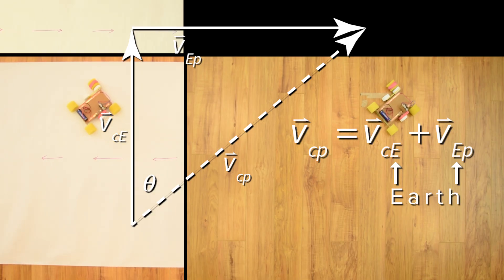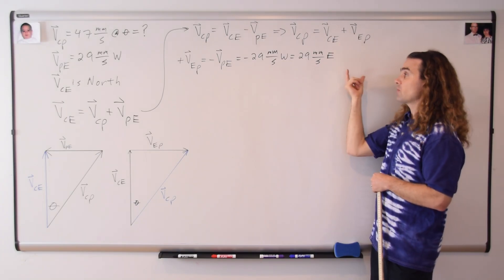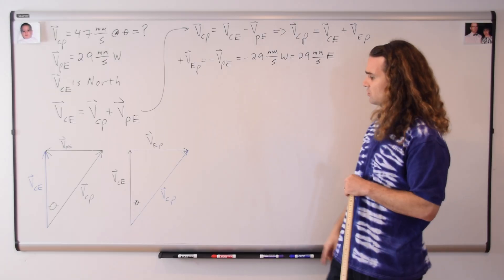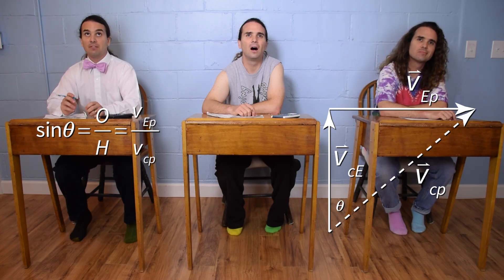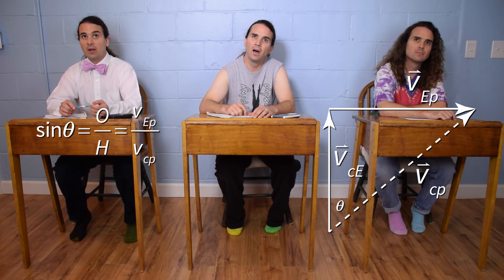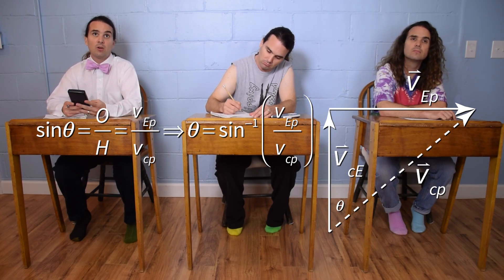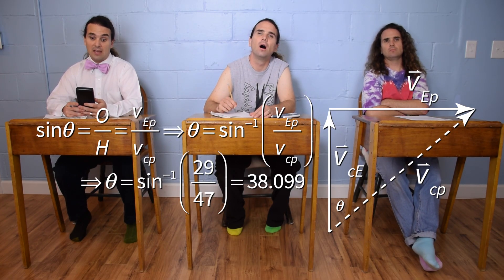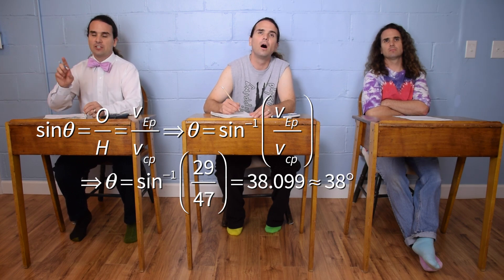Because the common subscript of Earth is on the inside of the subscripts on the right-hand side, it drops out and does not appear on the left-hand side. Now, Billy, could you please solve Part A — solve for theta in our vector diagram? Sine theta equals opposite over hypotenuse, which equals v sub e-p divided by v sub c-p. Taking the inverse sine: theta equals inverse sine of 29 divided by 47, which is 38.099 degrees — rounding to two sig figs, 38 degrees east of north.